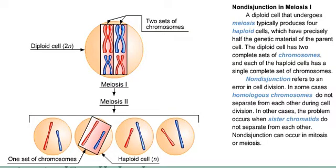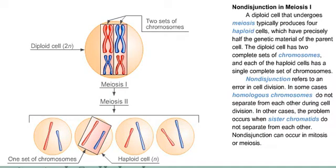Non-disjunction refers to an error in cell division. In some cases, homologous chromosomes do not separate from each other during cell division. In other cases, the problem occurs when sister chromatids do not separate from each other. Non-disjunction can occur in mitosis or meiosis.